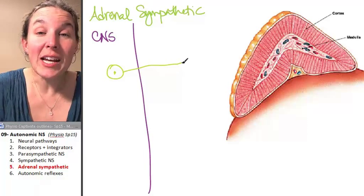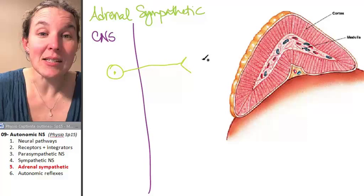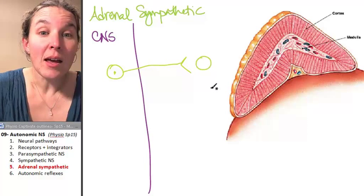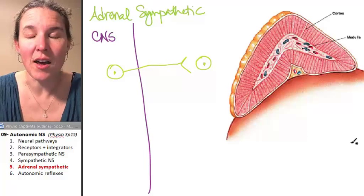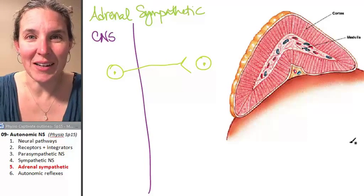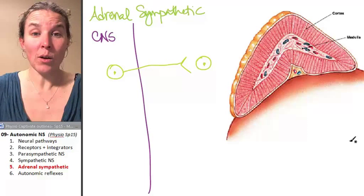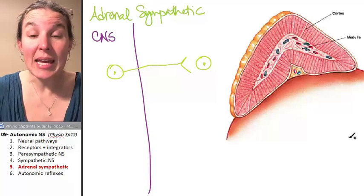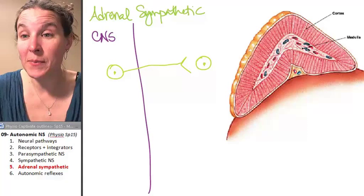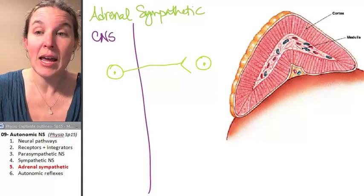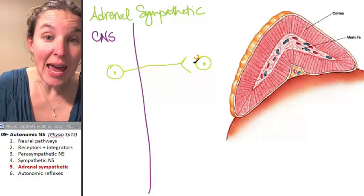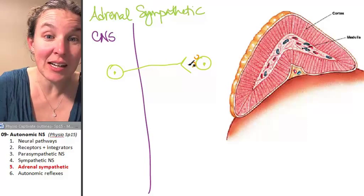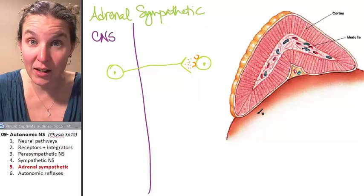But the preganglionic neuron synapses on basically a modified postganglionic neuron. All it is is a cell body. It doesn't have any axons. It does have receptors, and look at who the receptors are. It actually has both nicotinic and muscarinic receptors that respond to acetylcholine from the preganglionic neuron.